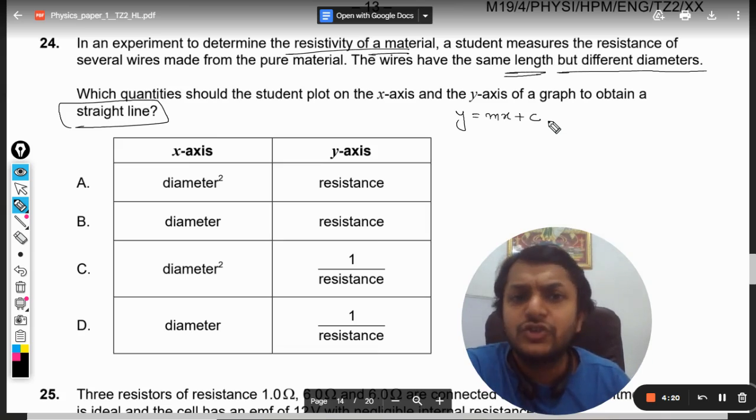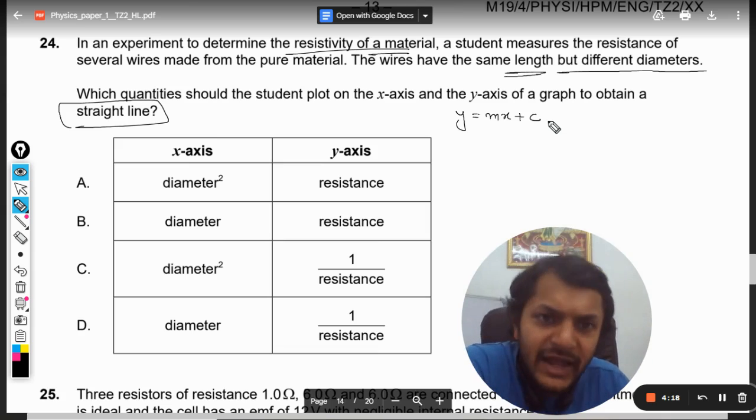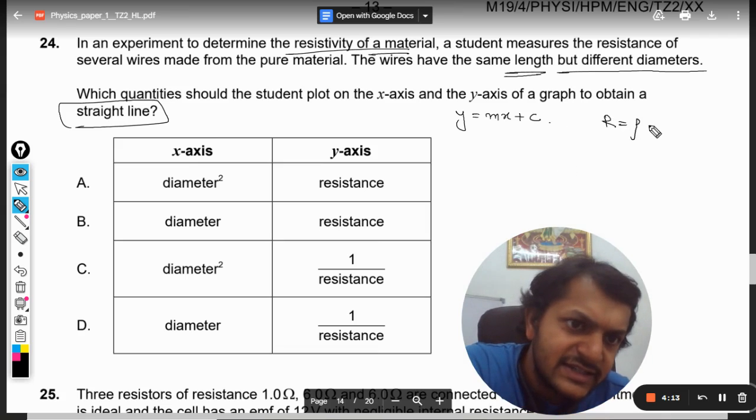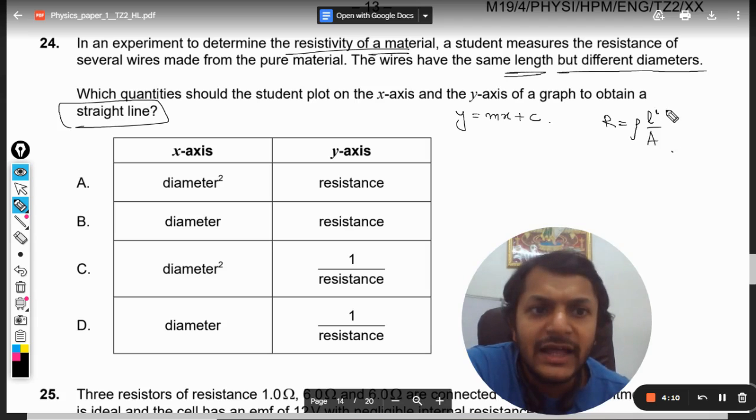c will be 0 in the case of Ohm's law, so let us use y = mx + c. Now the formula is R = ρL/A.